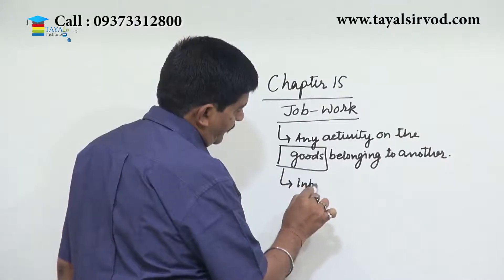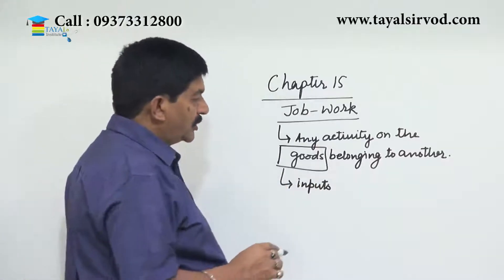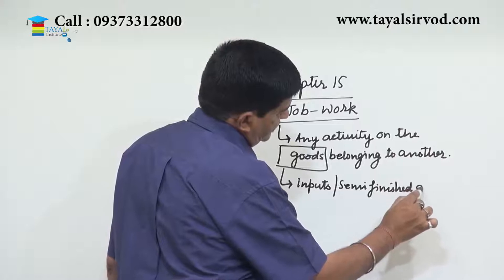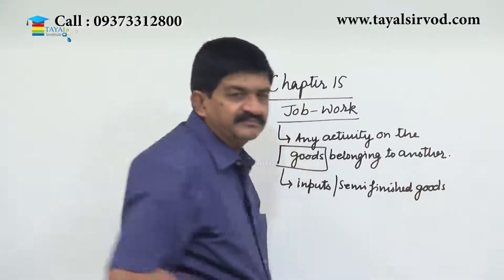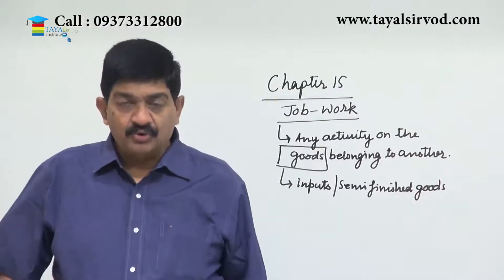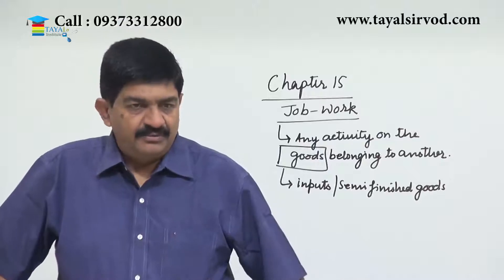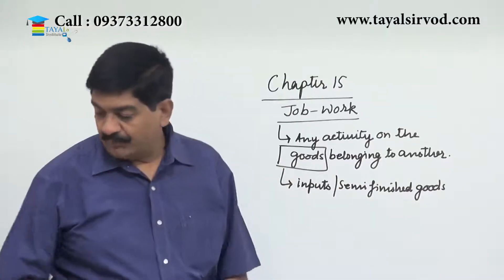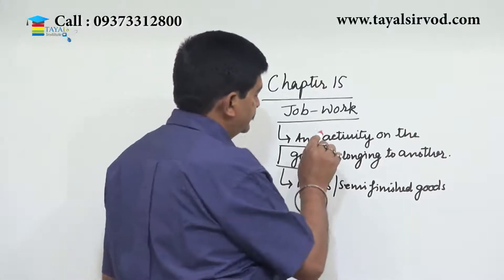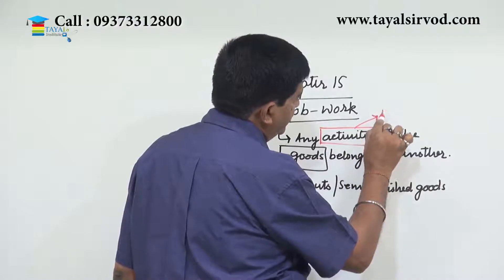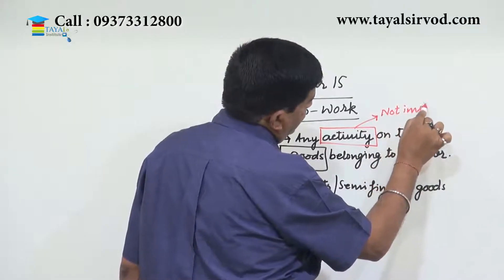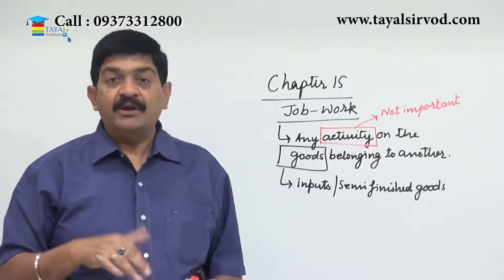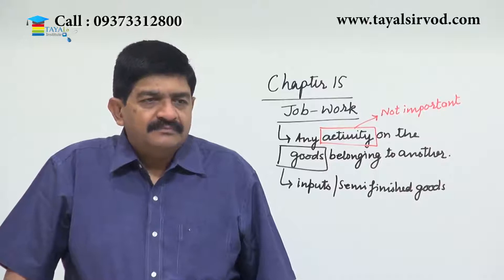These goods may be inputs or those may be semi-finished goods — goods which are provided by another person. The impact of the activity is not important, because this activity may result in manufacture or it may not result in manufacture. Both outcomes are quite possible.